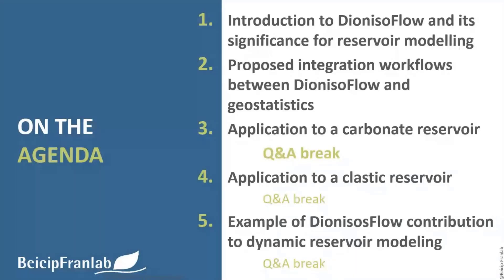Additionally, since we use two types of simulation — process-based followed by geostatistical — each type has its own uncertainty. We can run COUGAR flow for uncertainty analysis on the FSM results, and also use classical uncertainty approaches for the geostatistical simulation: different seeds, different variogram ranges and types, different proportion inputs. So there are two types of uncertainty to manage: one linked to the DIONYSOS model and another linked to the geostatistical procedure.